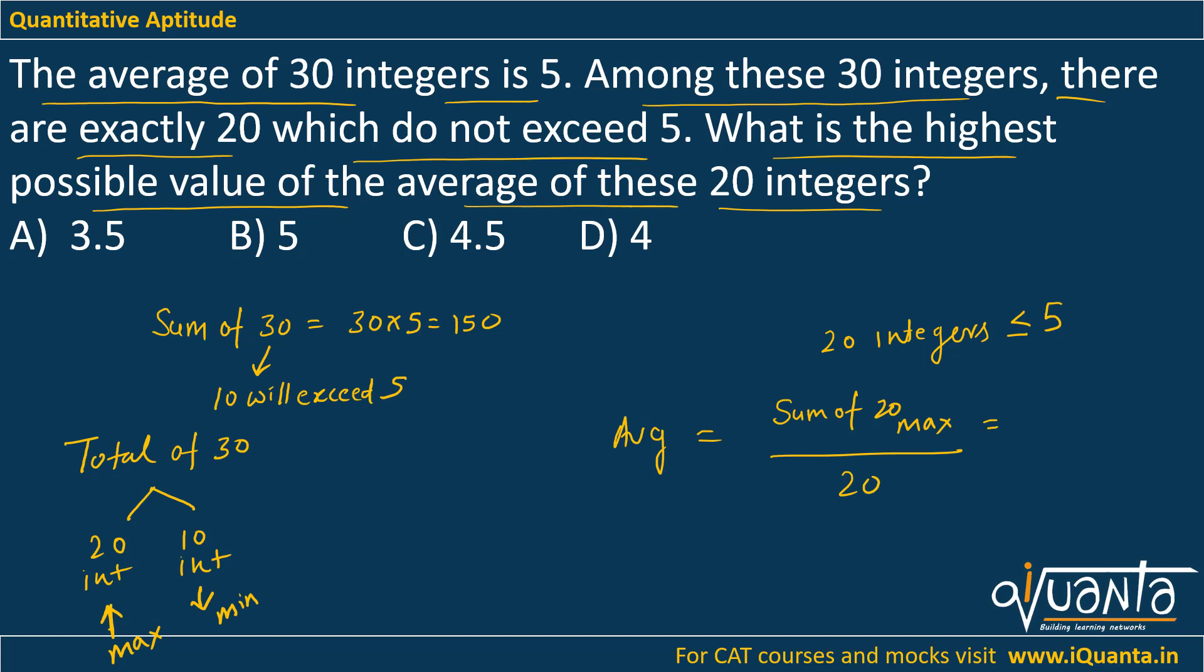So how will I minimize the sum of these 10 integers which exceed 5? If I take the minimum value for those 10 integers. What will be the minimum value of those integers? They are exceeding 5, so the minimum value greater than 5 is 6.